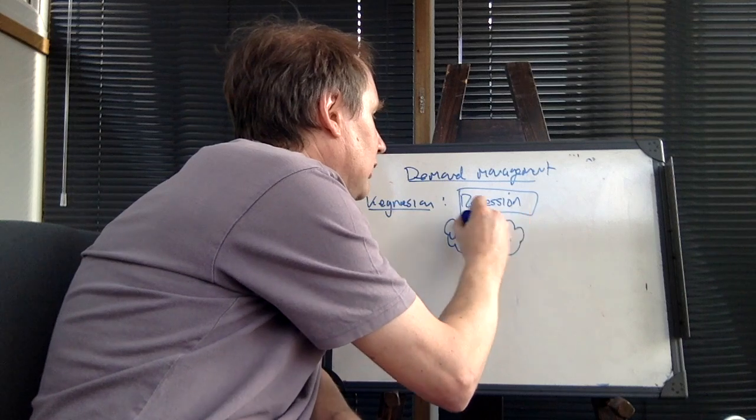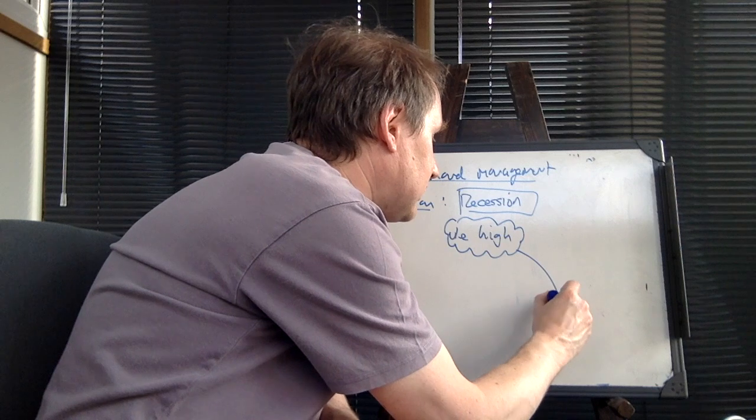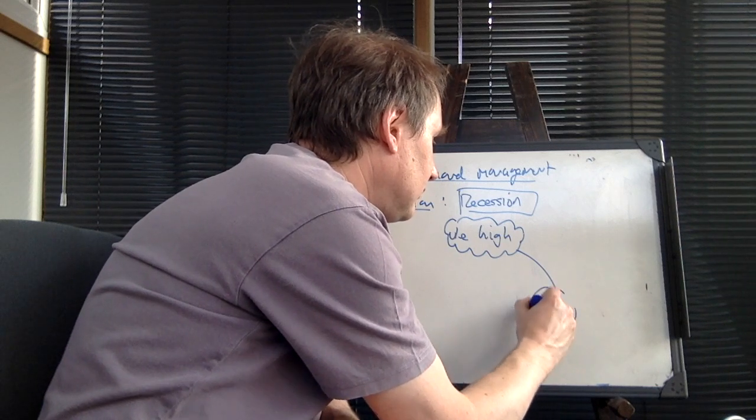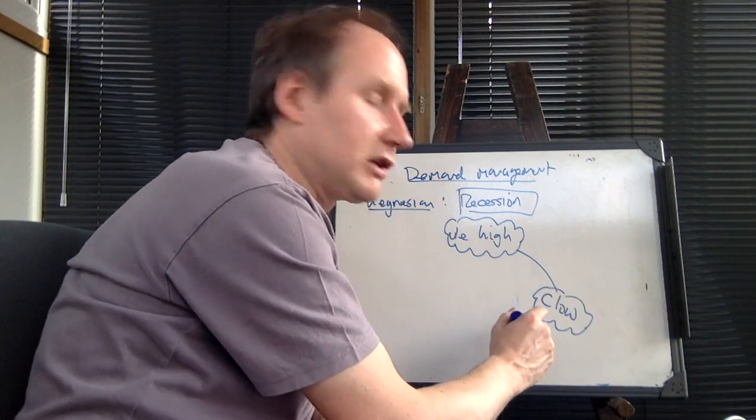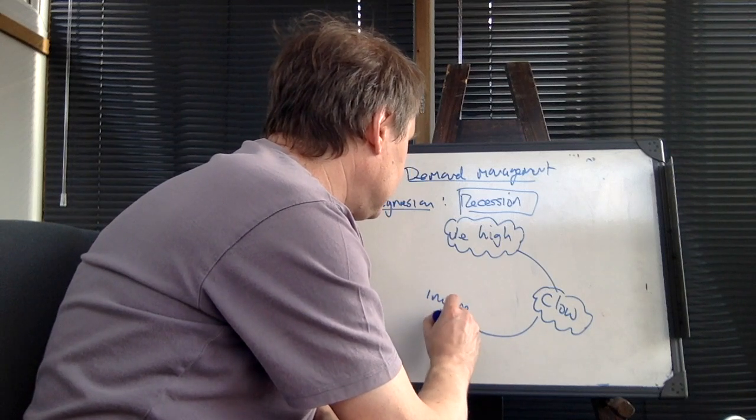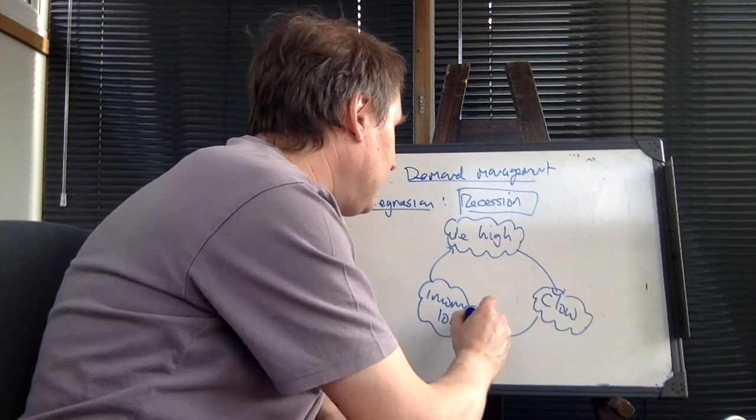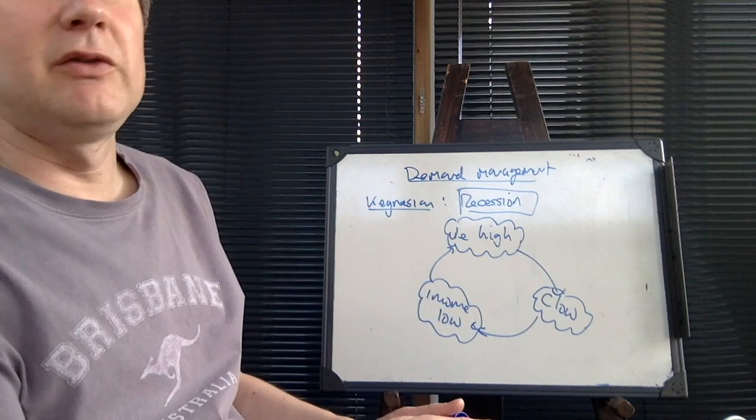And we know from the circular flow that when unemployment is high, then what that means is that consumption tends to be low. And because consumption is low, that means that income for firms is low.